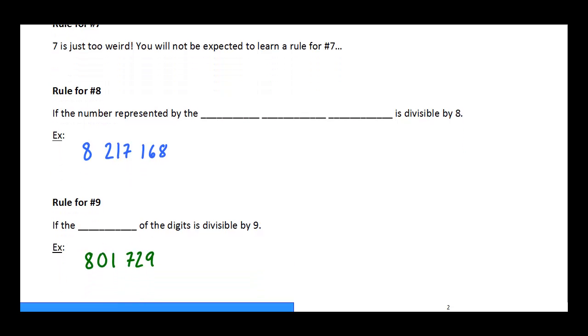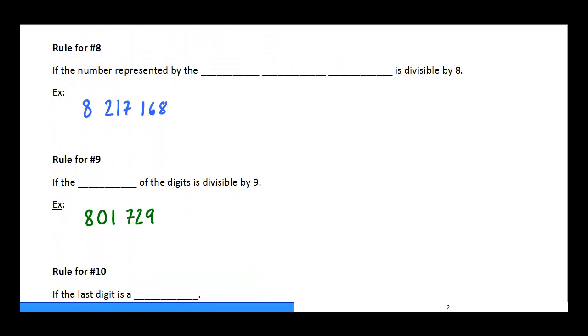So for number 8 we have got a rule, and it is a similar rule to number 4. Where for number 8 we have to look to see if the number represented by the last 3 digits is divisible by 8. Then the entire number is divisible by 8. So we can zero in on these last 3 digits. Now this is not quite as simple as the rule for 4 where we only have to look at 2 digits.